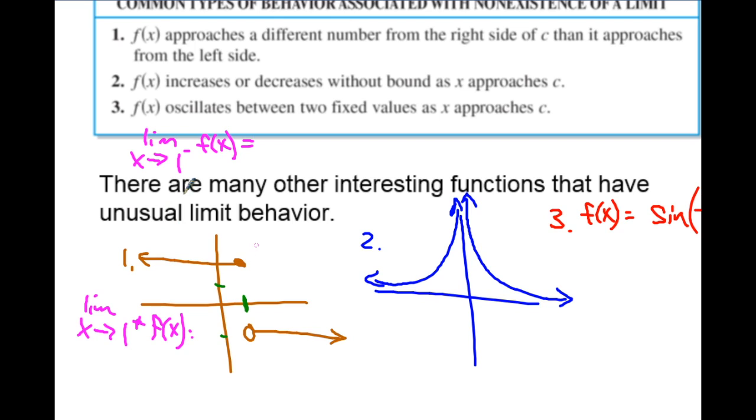This limit would be two. However, if you approach from the other side, the limit as x approaches one from the right—that positive exponent means we're approaching from the right. As we go from this direction, we hit a value of negative one. Those two things are not in agreement, so the limit does not exist at x equals one.